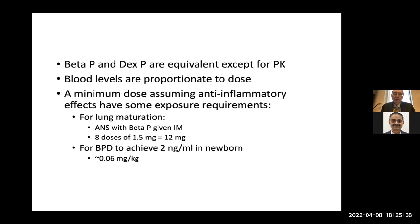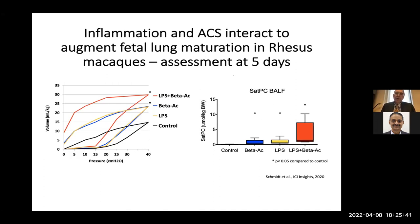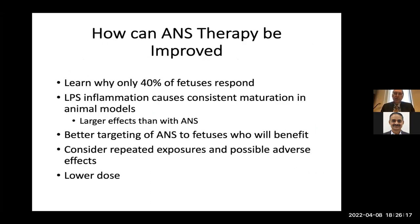Something interesting we found years ago: when you cause inflammation with chorioamnionitis, you actually augment fetal lung maturation in rhesus monkeys. Giving them a combination of beta acetate — the low dose, causing a very low blood level — plus intra-amniotic LPS produces a very good pressure-volume curve and saturated PC response in the BAL. This low dose works even in the face of infection. So how can antenatal steroids be improved?